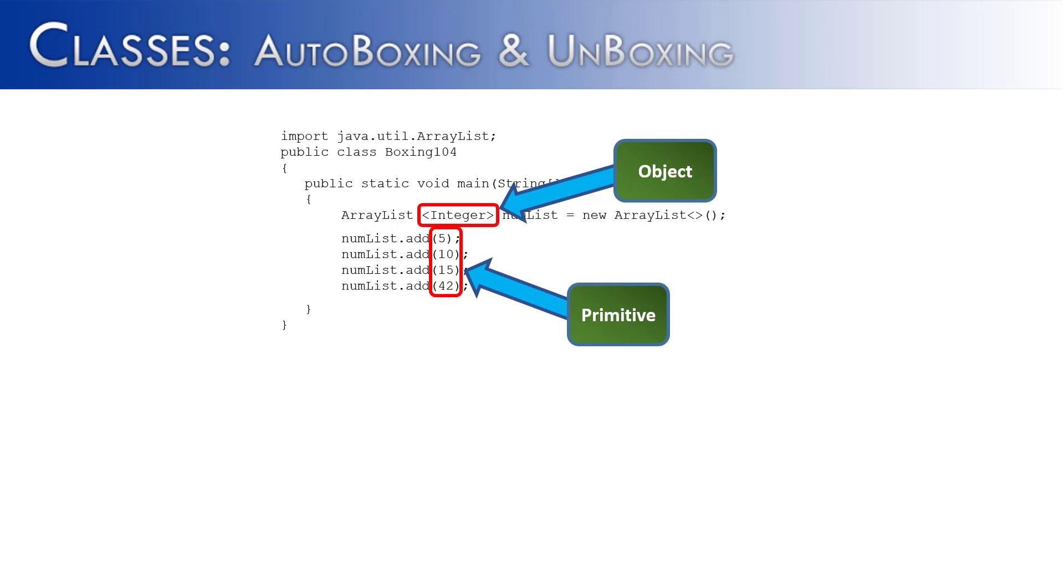We see that 5, 10, 15, and 42 are all primitives, but the ArrayList can only contain integers. It cannot contain primitive ints. So something must be happening along the way. And that something, of course, is autoboxing.